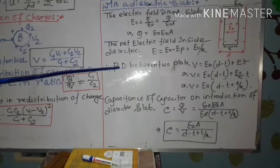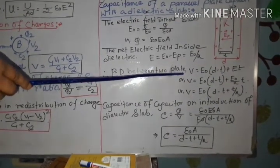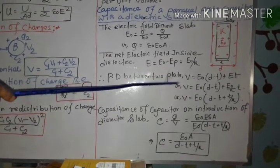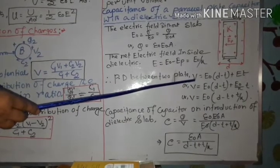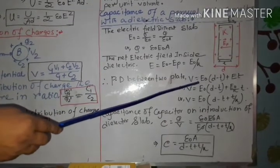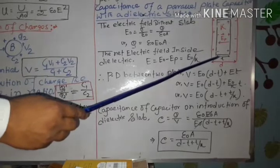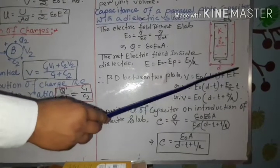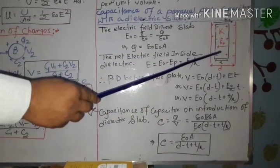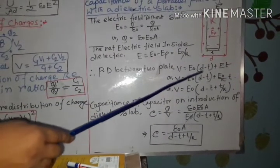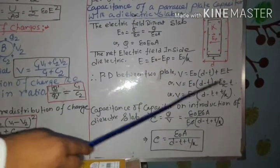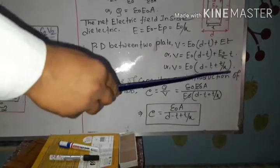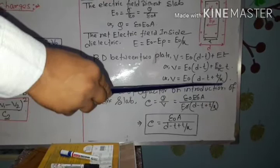We also need the potential difference between the plates. Since E equals potential difference by distance, potential difference V equals electric field into distance. Therefore, V equals E naught into D minus T, plus E into T. In place of E we write E naught by K, so V equals E naught into D minus T plus T by K. This is the expression for potential difference after introducing the dielectric slab.